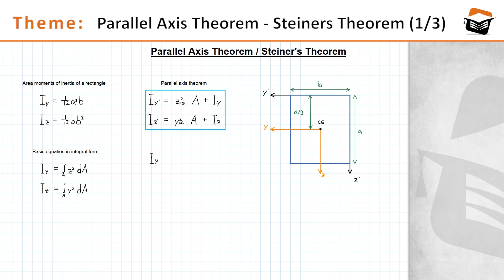Now let's start plugging in values. Looking at the rectangle, the distance z sub cg is a over 2, since the centroid is in the middle of the rectangle. So I sub y prime equals z sub cg squared, which is (a/2) squared, times A, the area of the rectangle, which is simply a times b, plus I sub y, which is one twelfth times a cubed times b.